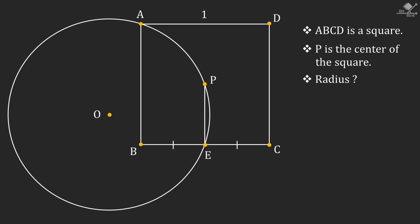Let's start with the information given on the question. ABCD is a square, point P is the center of the square, and we are asked the radius of the circle.